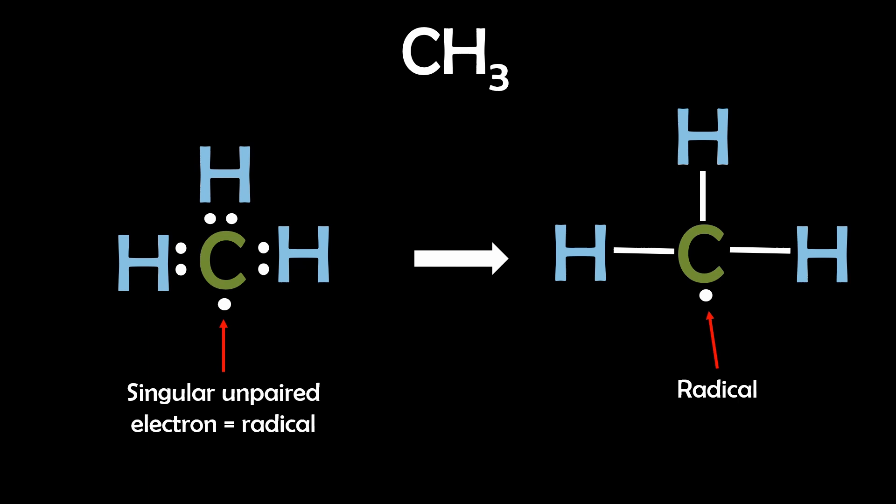In summary Lewis structures provide a clear and concise way to represent molecular structures indicating how atoms are bonded and where lone pairs of electrons are located. This visualization aids in understanding the bonding and reactivity of molecules. That's about it for this video, thank you for watching until next time.